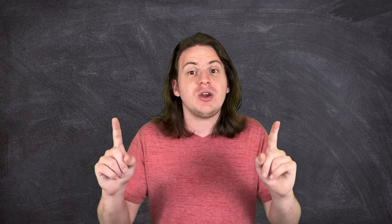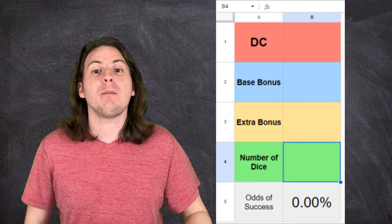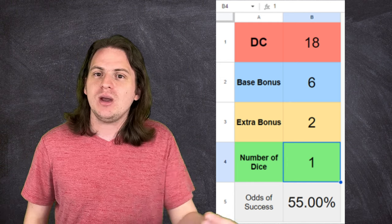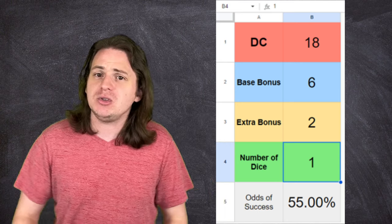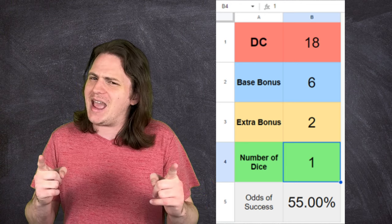And also, in the description, I've included a link to the table from this video as well as a calculator where you can plug in your bonuses, DC, and how many dice you're rolling, and you can find your odds of success in a second. If you're the type of person who doesn't like doing math at the table, but are tired of missing all the time, I got you.